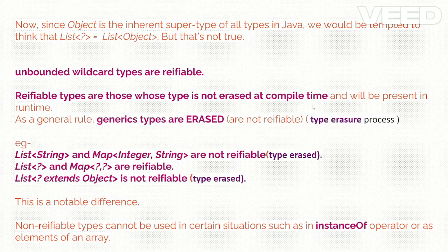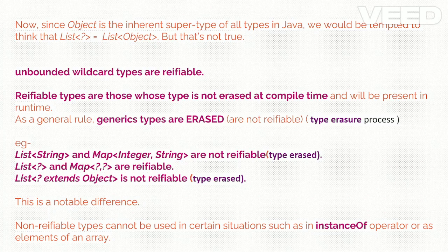Unbounded wildcards are reifiable. Reifiable types are those types that are not erased at compile time and are present at runtime. As a general rule, all generic types are type-erased, meaning they are erased at compile time and will not be present at runtime.